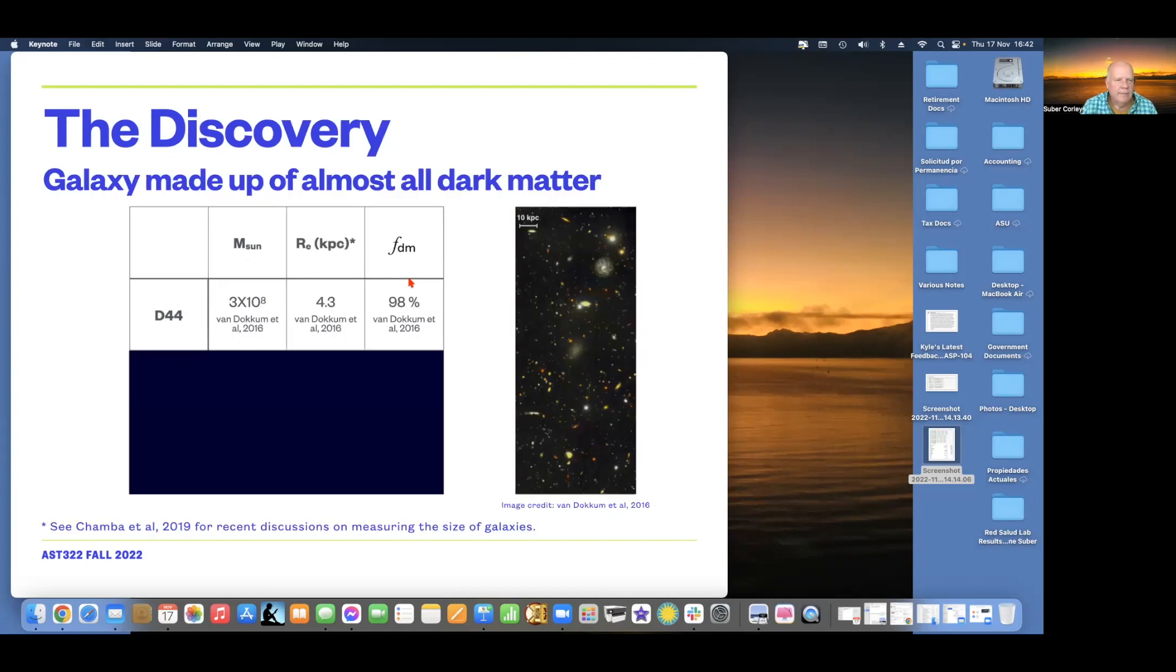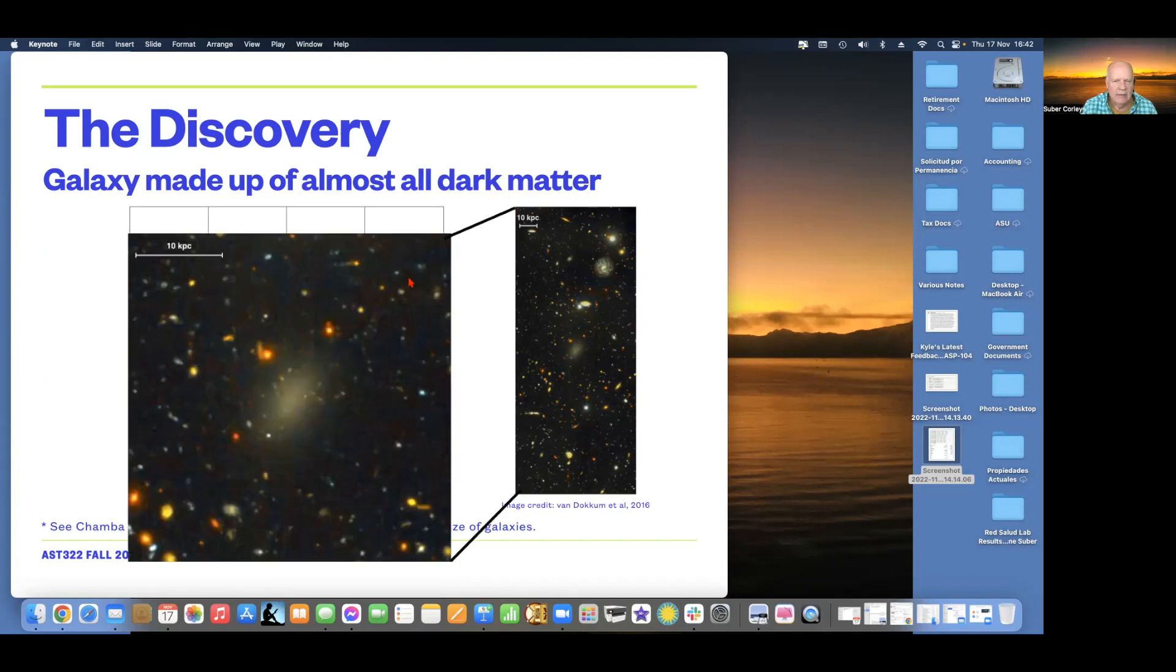So, the discovery. Dragonfly 44 is what is called a diffuse or ultra-diffuse galaxy. As you can see here in this blow-up, it's sitting in the middle of the square, and it just looks like a very faint glow of light, but in fact, it is a large galaxy.